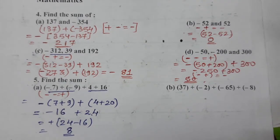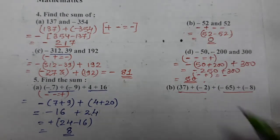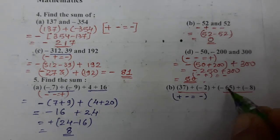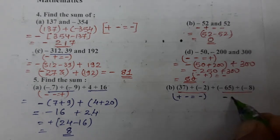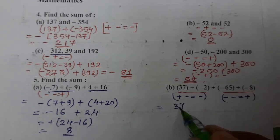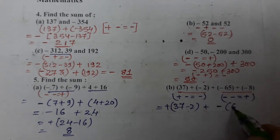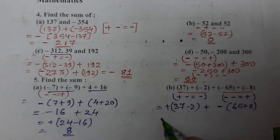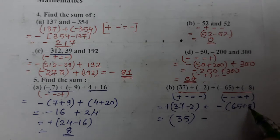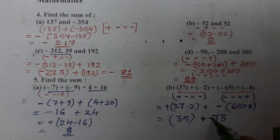Next is the last one. Again let us take the pair — in dono ka ek pair bana lete hain. One plus one minus means plus minus is minus, put sign of bigger one. Both are minus here, so minus minus plus, put sign negative. 37 minus 2 = 35 (positive), and 65 plus 8 = 73 (minus).